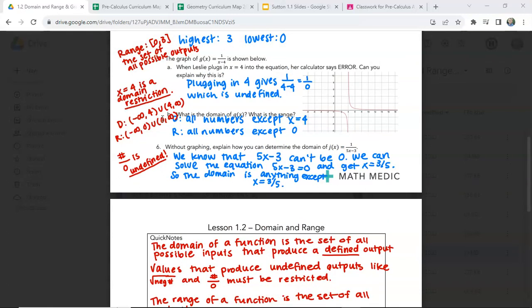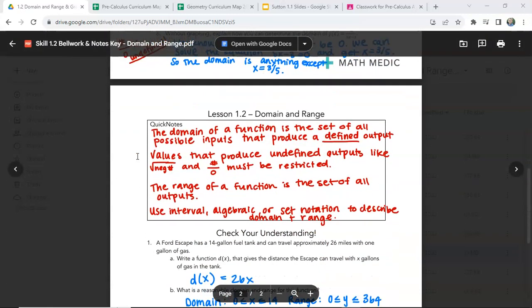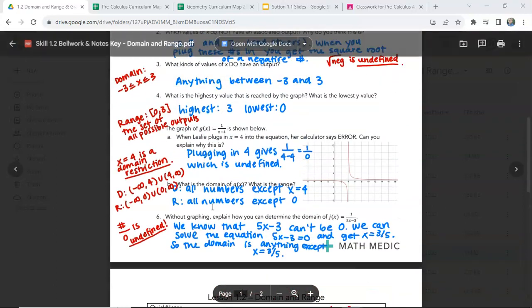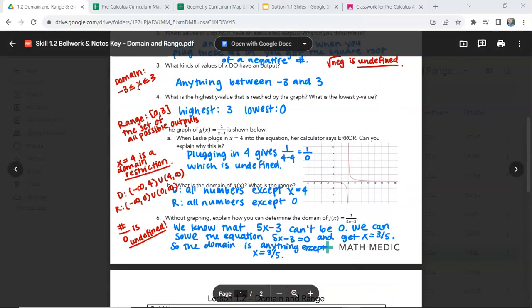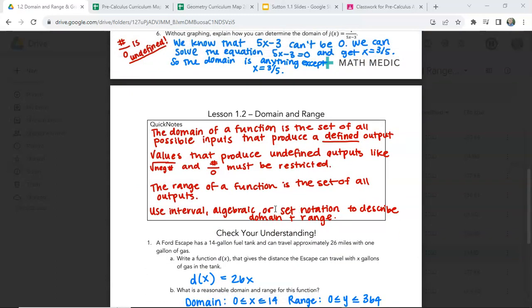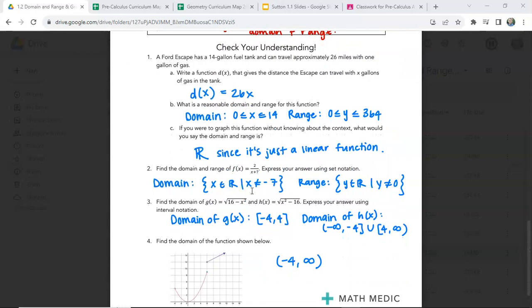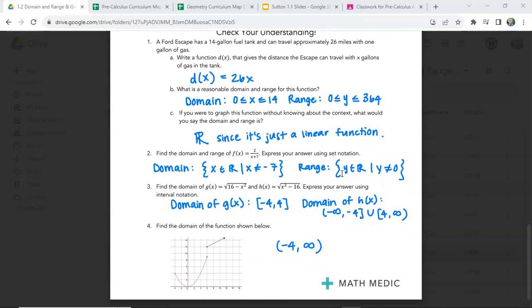So interval notation is this, is the parentheses and the brackets that we were talking about before. That's interval notation. Algebraic notation is the less than or equal to notation. Set notation is this. This is the set notation with the brackets, within all real numbers, and then it gives a description later. So I'm not expecting you to know how to use set notation yet. We haven't really touched on it. Interval notation is a little bit easier to pick up, I think. But if you want to just stick with the algebraic notation that you've been using, that's fine for now.